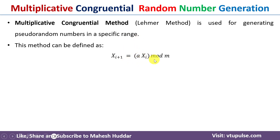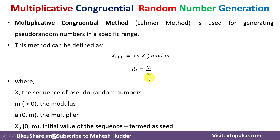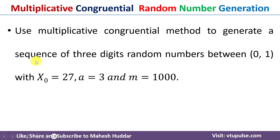This method can be defined as: X(i+1) = a · Xi mod m, and Ri = Xi / m. Here, X is the sequence of pseudo-random numbers, m is the modulus which is always greater than zero, a is the multiplier with a value between zero and m, and X₀ is the initial value of the sequence, also known as the seed, where X₀ is greater than zero and less than m.